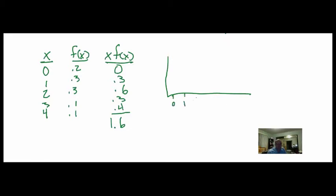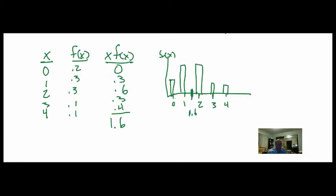Let's draw this graphically. We plot 0 through 4 cars on the x-axis with f(x) as the height: 0 was 0.2, 1 was 0.3, 2 was 0.3, 3 was 0.1, and 4 was 0.1. The expected value of 1.6 sits right at the balance point of this distribution — not quite 1.5, a little further over. This is the average. If we know the probabilities of each outcome, we can find the expected value using this weighted average.